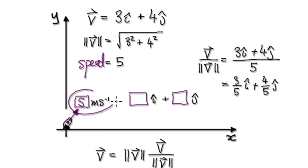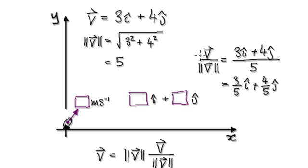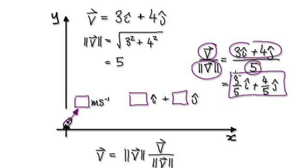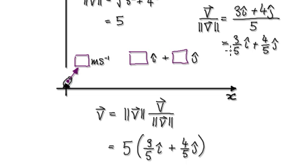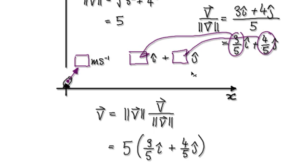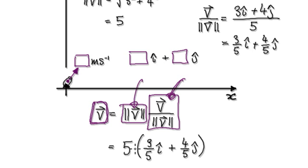You're shooting the cannonball at five meters per second. Now to obtain the direction, turn the velocity into a unit vector: take this vector divided by its magnitude, and that gives you your unit vector. From this you can extract your direction. You can always rewrite the vector as being its magnitude times its direction. So this is your speed and this here is your direction.